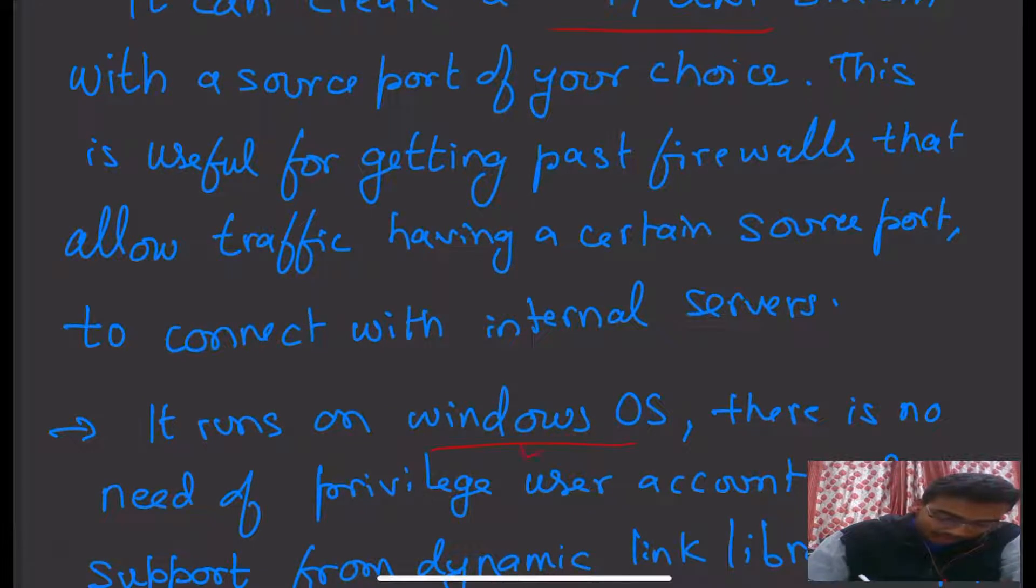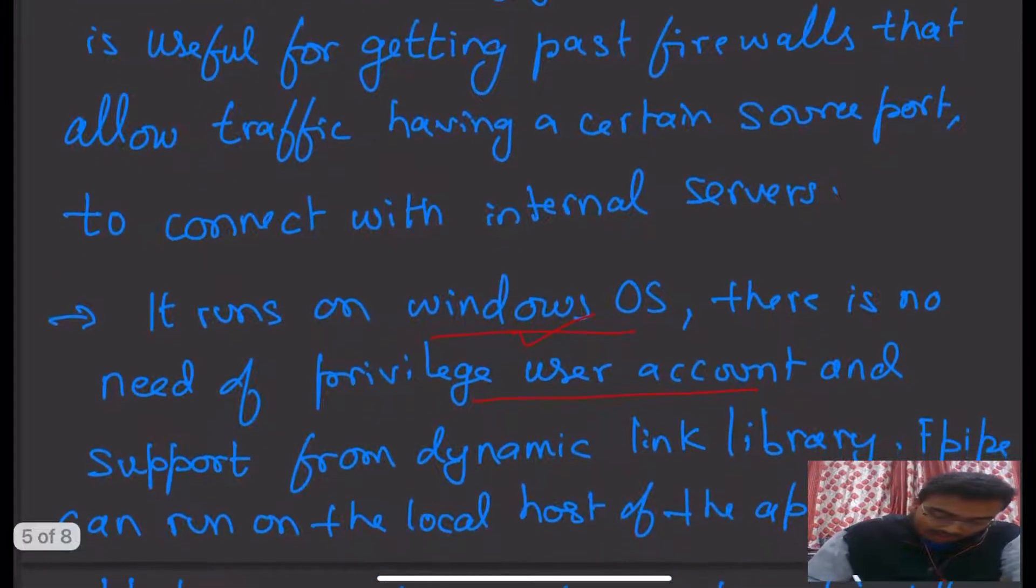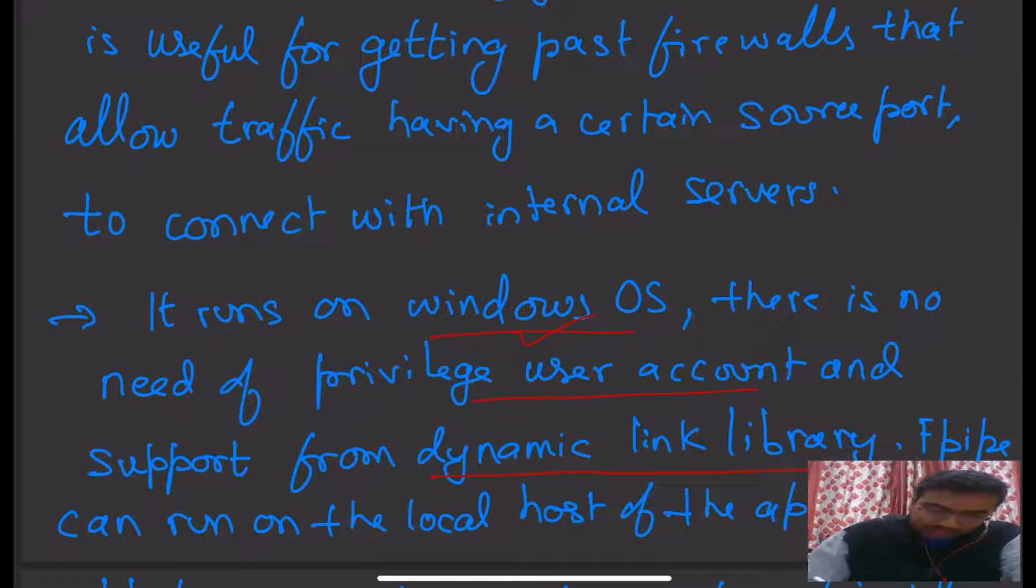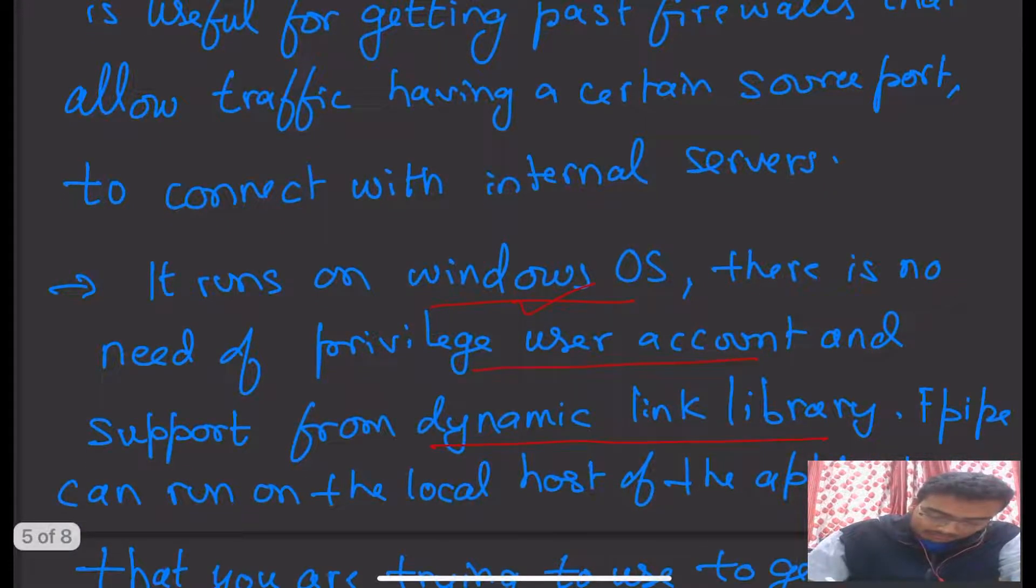It runs on Windows OS. There is no need for a privileged user account and support from dynamic link library. This is the third point of difference, whereas we were using sigwin.dll in the previous Datapipe video.